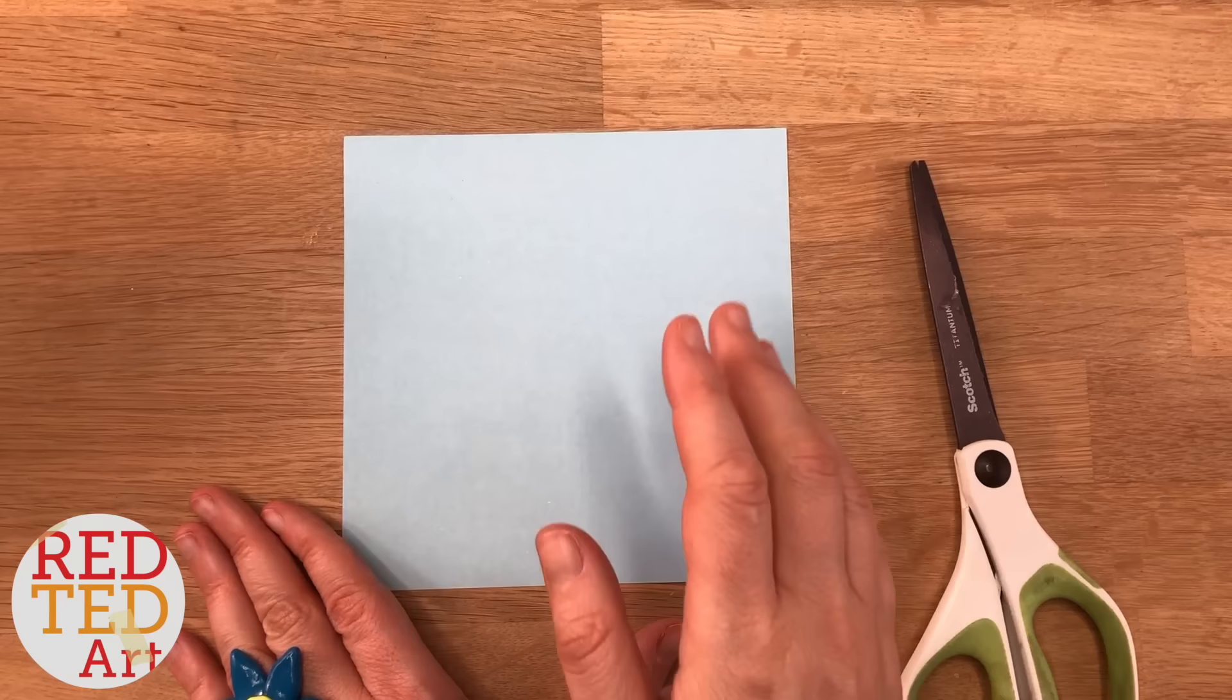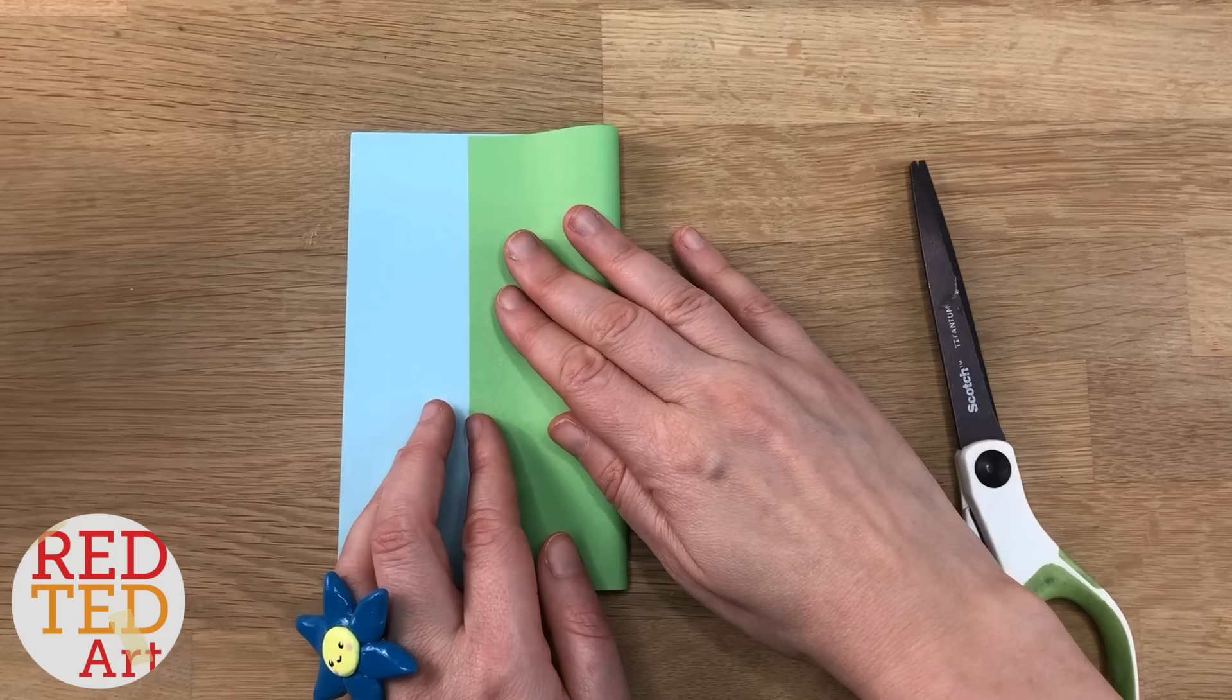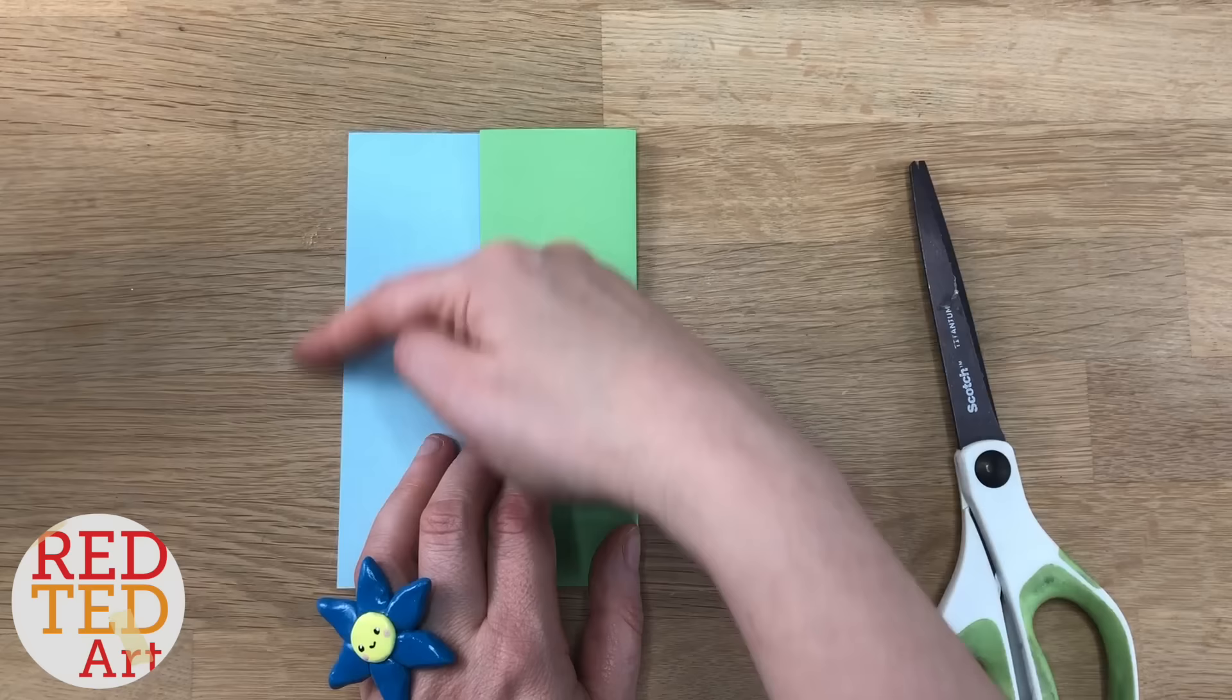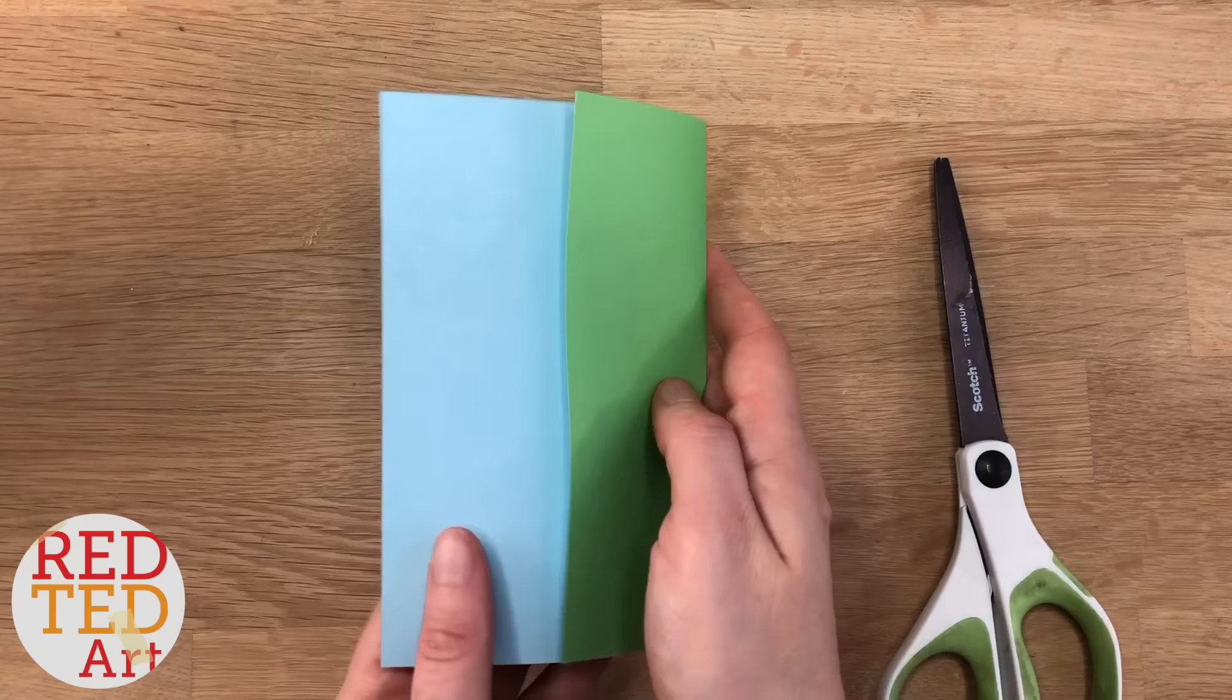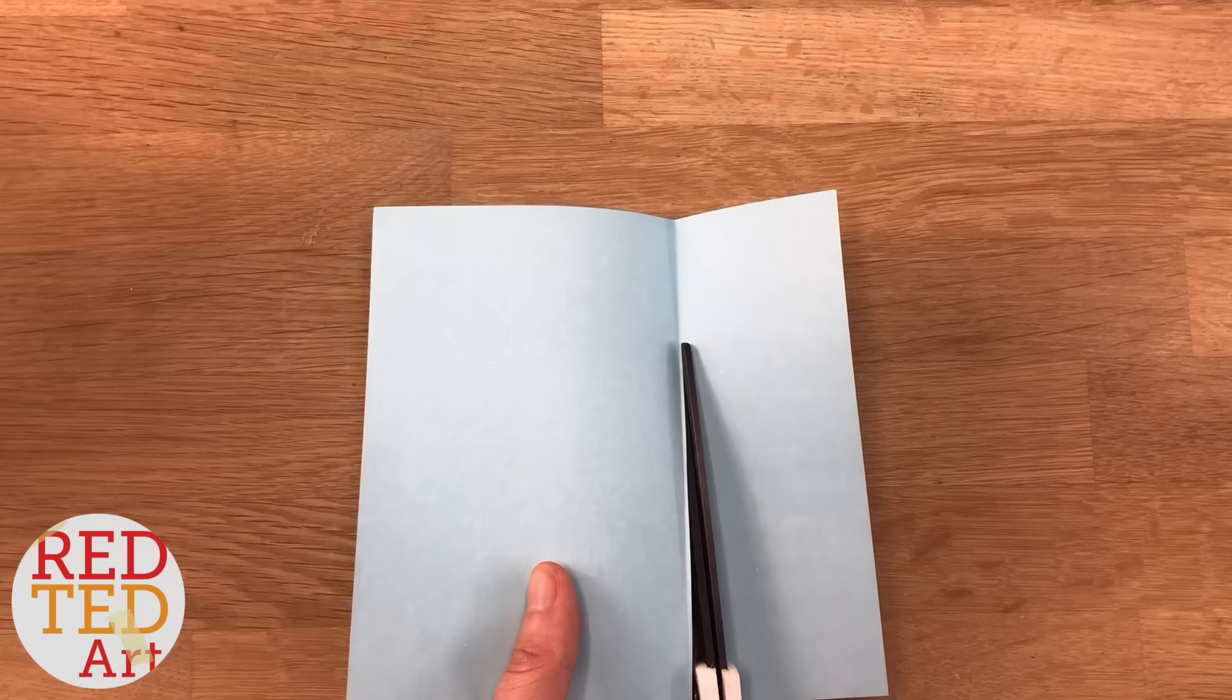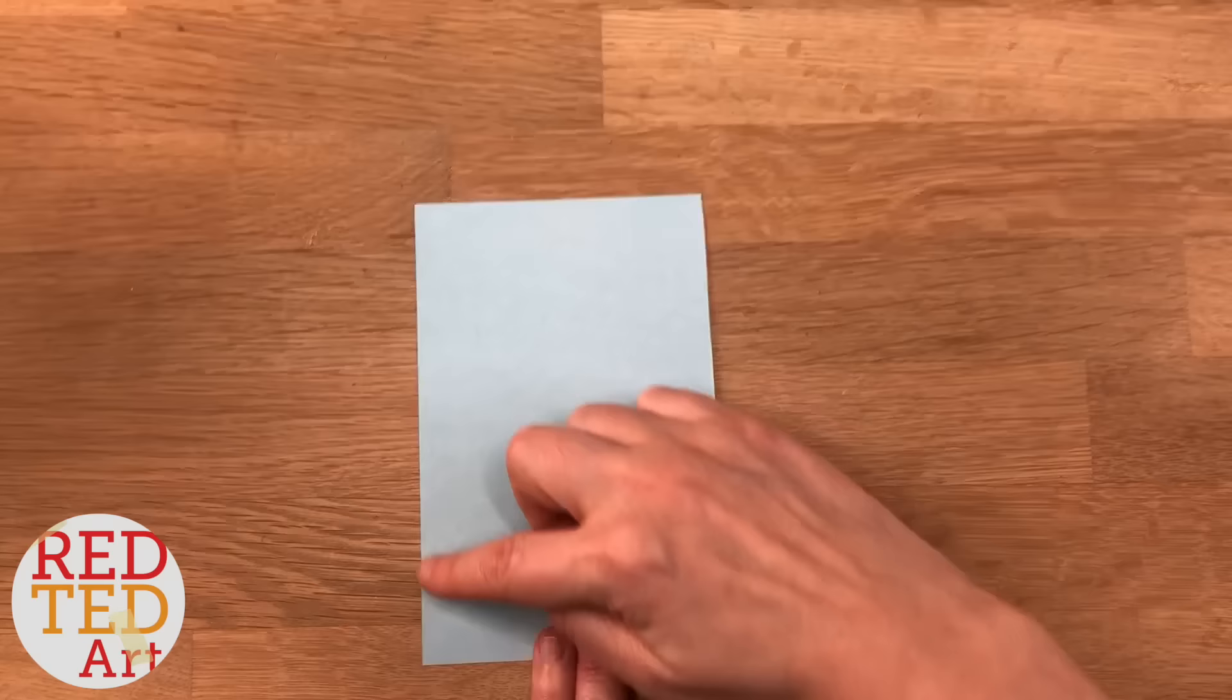You'll need not a square piece of paper, but a rectangular piece of paper. The ratio for the rectangular piece of paper is roughly two here and three across. By folding it over by a third and cutting that off, we have the right proportion. So it's going to be 15 by 10 for my butterfly, so three and two.